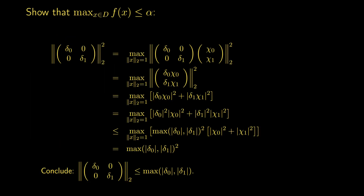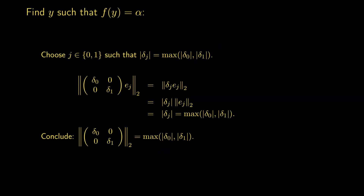Applying that here: in the first part of the proof we focused on the definition of the 2-norm and showed it was less than or equal to the desired result — that's our α. We then found a specific vector, the standard basis vector corresponding to the diagonal element maximal in absolute value, for which α is attained — where α equals the maximum of |δ₀| and |δ₁|. Therefore the 2-norm of the diagonal matrix equals the maximum of the absolute values of the diagonal elements. This is a proof technique you'll see over and over in future homework proofs.